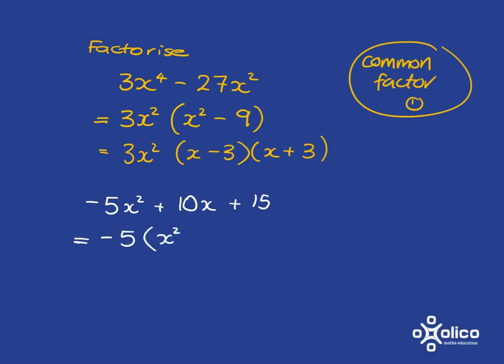Let's take out the negative 5. What will be left from here is an x-squared and then from here it will be minus 2x because negative times negative will get you back to the positive. And here it will be negative 3.